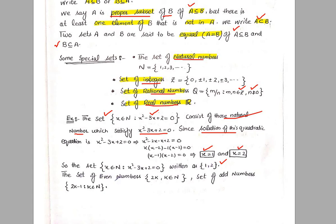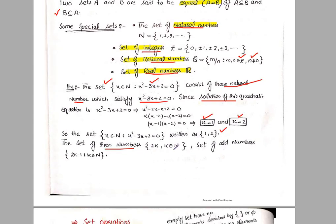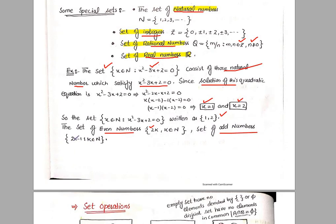Next is the set of even numbers. We denote these as {2k : k ∈ N}. If we put different values of k here, we get even numbers. Next is the set of odd numbers. We denote these as {2k − 1 : k ∈ N}. If we put different values of k, we always get odd numbers. This is the set of even numbers above, and this next one is the set of odd numbers.